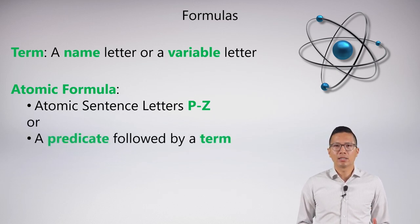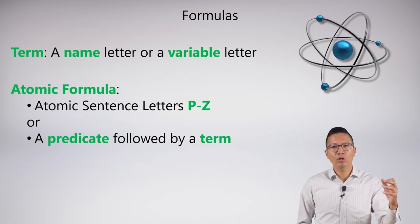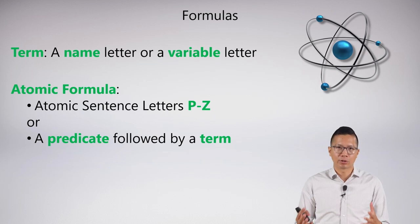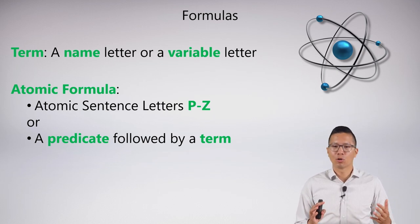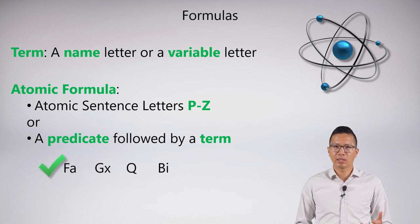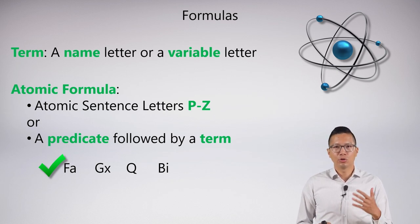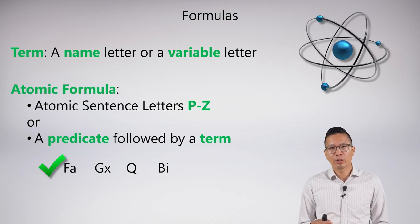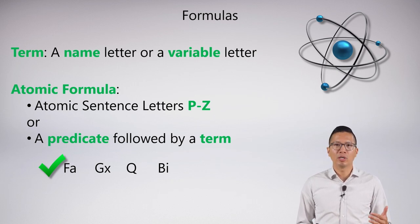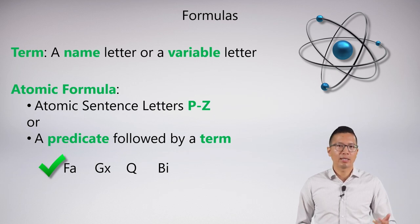We add a new type of atomic formula: a predicate letter (capital A through O) followed by a term. Basic examples include FA — capital F is a predicate followed by name letter A — and GX, where X is a variable letter. Q is also atomic since it's one of our atomic sentence letters, capital P through Z. Capital B lowercase i is another valid example.